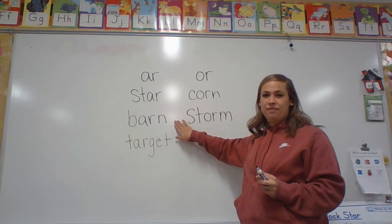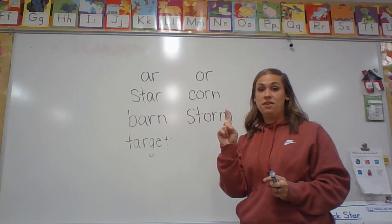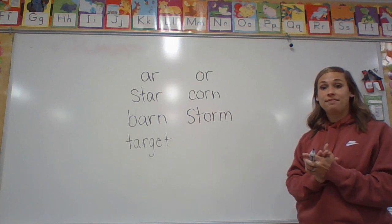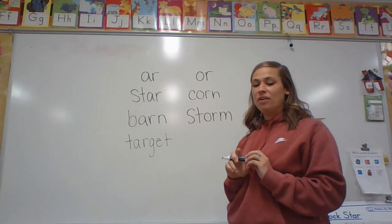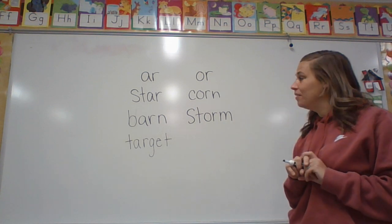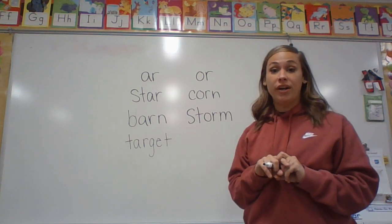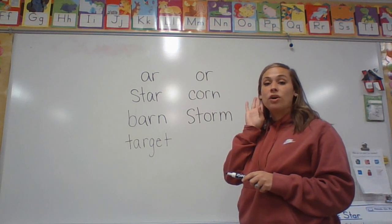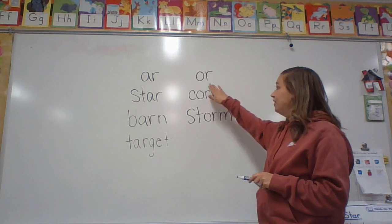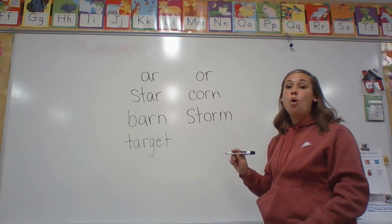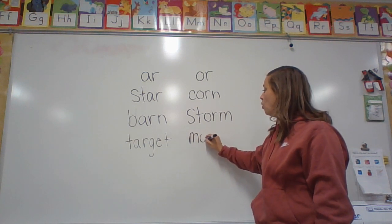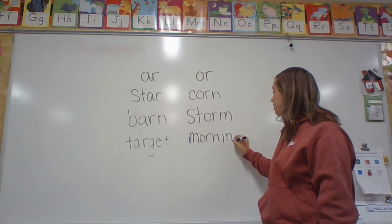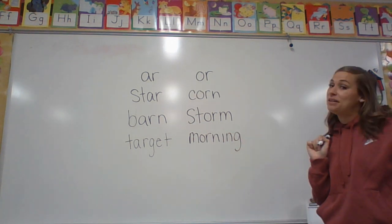How many syllables does barn have? Barn. Just one. How many syllables does corn have? Corn. Just one. Very good. Let's do one last word. This is the word morning. Morning. What do you hear when you hear me say the word morning? Very good. You're going to hear OR. Morning. And then ING is ING. Very good. And how many syllables does morning have? Very good — two syllables.